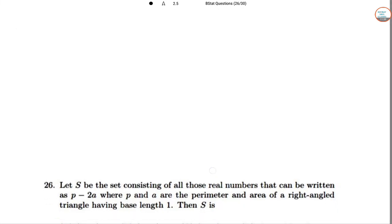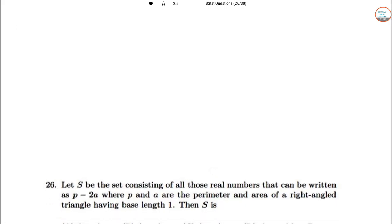Now go to 26. Let S be the set consisting of all real numbers that can be written as P - 2a, where P and a are the perimeter and area of a right-angled triangle having base length 1. So S we need to find out. Let x be the height of the triangle.